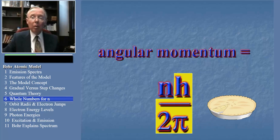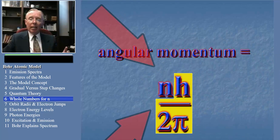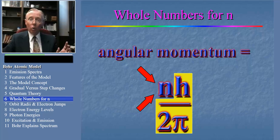That's not apple pie, but pi the number. The important part of the formula is n, because n can only have values of whole numbers. We can have an angular momentum which is 1 times h over 2 pi, or 2 times h over 2 pi and so on, but never 1.5 times h over 2 pi.